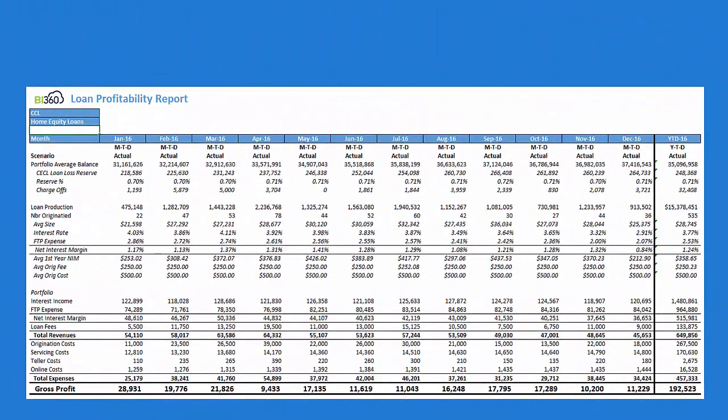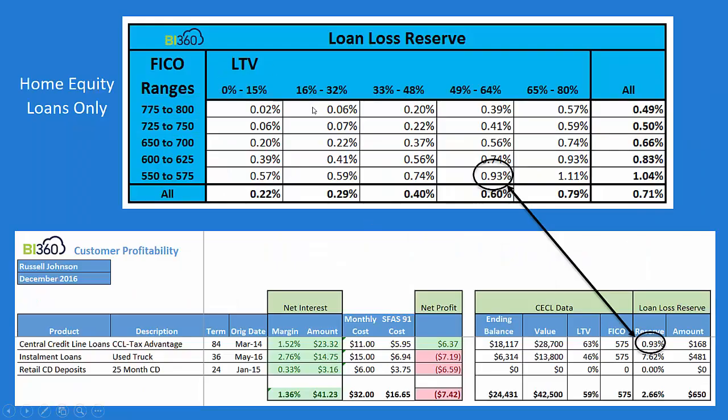Here we're looking at my portfolio as a whole for my home equity loans. And if you look at my average balances over time, $31 million over time. Based on the CECL loan loss reserve where I go in note by note and apply these rates to all the various notes. Some of them have FICO scores here and loan to values here. So I'm cross multiplying every single note. But at the end of the day, my portfolio is coming back to 71 basis points.